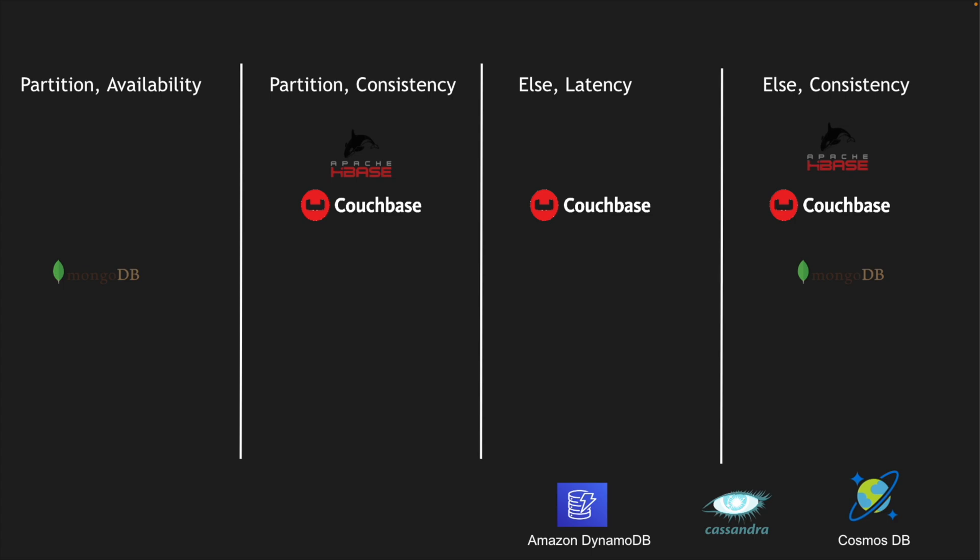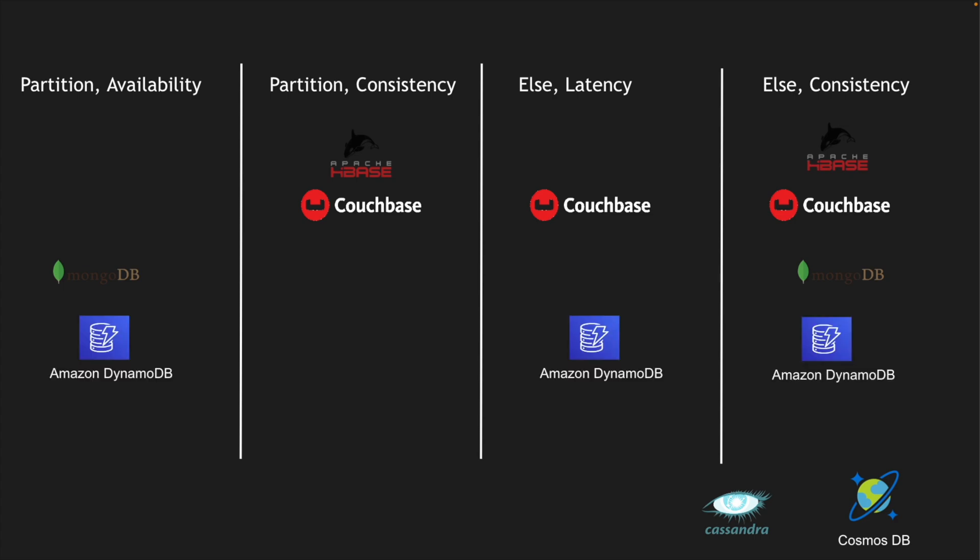MongoDB slightly varies: it can be configured as a highly available database that loses consistency but prioritizes availability, and also has a mode where consistency is the primary need. DynamoDB is a mixture of CouchBase and MongoDB — it chooses availability when there is a partition, and latency or consistency when there is no partition, giving you three different configurable variations in your cluster.